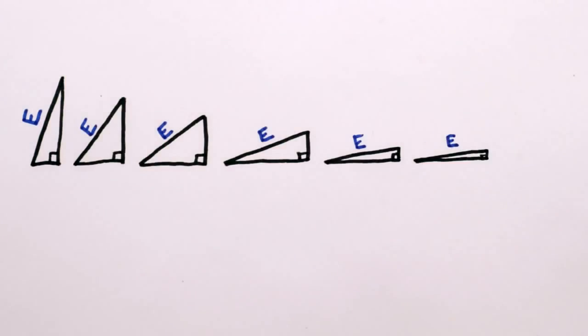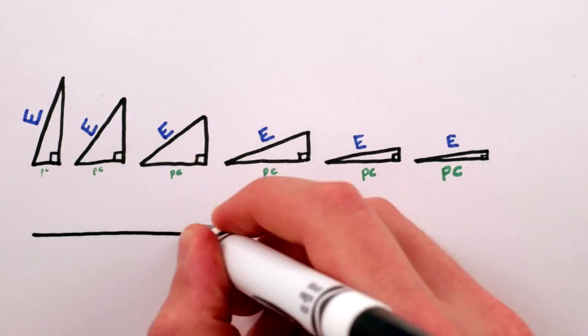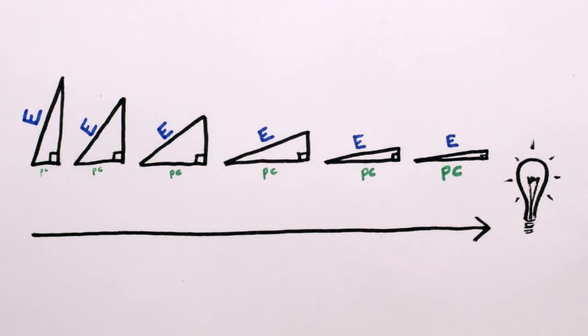In fact, the closer the energy of something is to p times c, the closer that something is to behaving like light. Look here, this tiny little bit of mass is hardly mass at all.